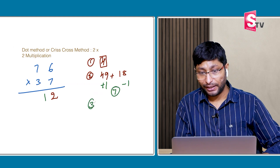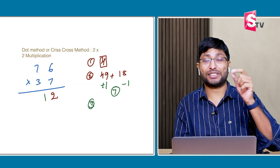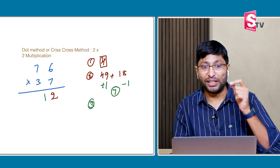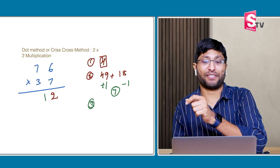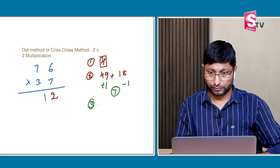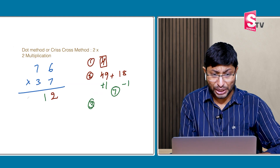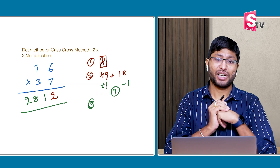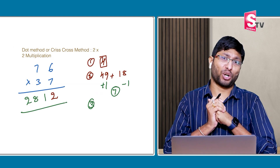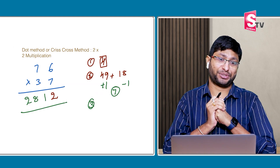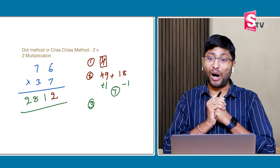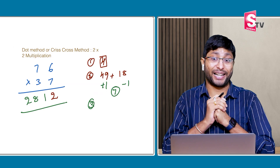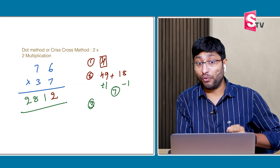Step 3: 7 × 3 = 21. 21 plus 7 carry = 28. Answer: 2812. How simply I'm solving the calculation!